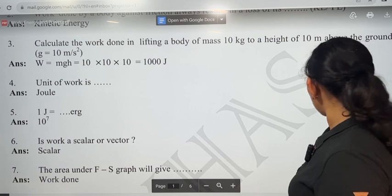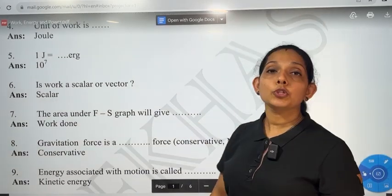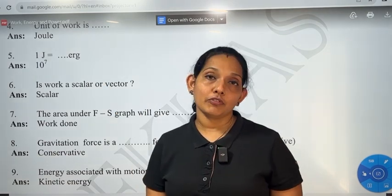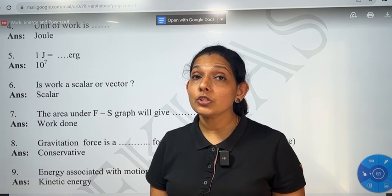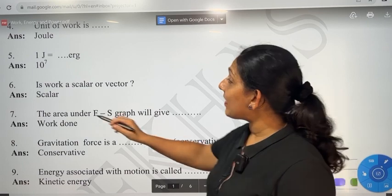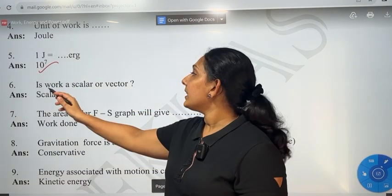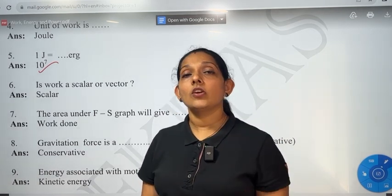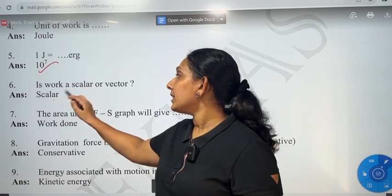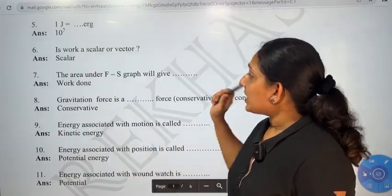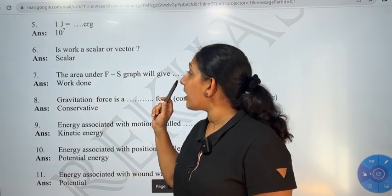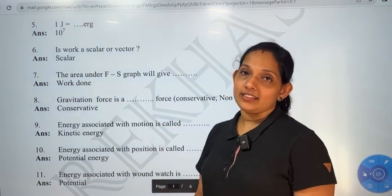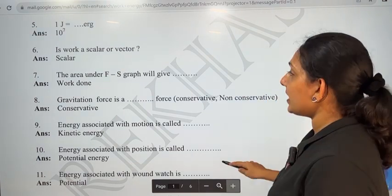The third question: joule is the SI unit of work, and erg is the CGS unit of work. 1 joule equals 10 raised to 7 ergs. Is work a scalar or vector quantity? Work is a scalar quantity — it has magnitude but no direction. The area under a force-displacement graph gives work, because work equals force into displacement.